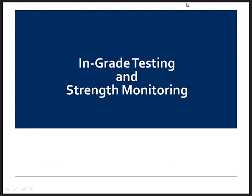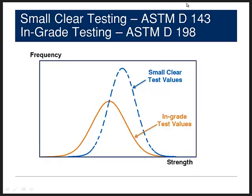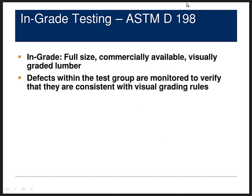Now that we've introduced the traditional approach to developing design values from small clear testing, we move forward in time to in-grade testing and strength monitoring, taking us from the 1920s into the 1970s and 80s. The small clear testing standard is ASTM D143; the in-grade testing standard is ASTM D198. In-grade testing is called in-grade because it is performed on full-size commercially available lumber that has been visually graded. The defects within the test sample are statistically monitored to verify they are consistent with the grading rules, checked against the strength ratio — the 0.45 factor for number two grade. That verification is an essential step that's often overlooked by engineers not familiar with wood testing.